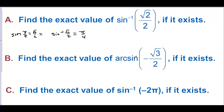Find the exact value of arc sine of negative square root of 3 over 2, which is inverse sine. Remember that we can only pull values from quadrant 1 or quadrant 4. We're looking for an angle that has a sine of negative square root of 3 over 2. That's negative pi over 3. Pi over 3 has a sine of square root of 3 over 2, but we need the negative angle. You have to get that value from quadrant 4, and the shortest distance gives the answer.